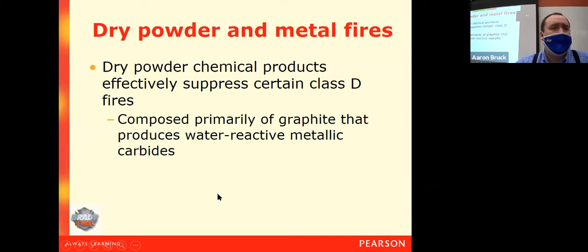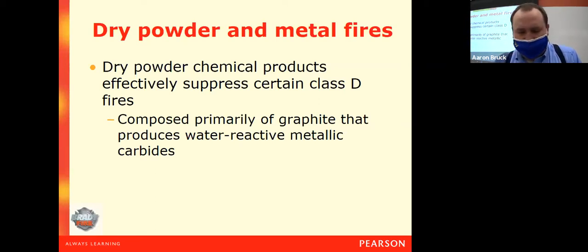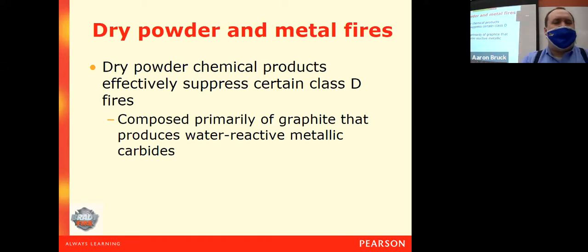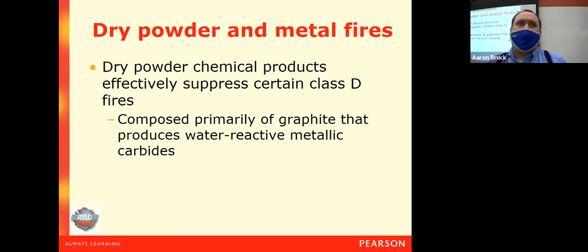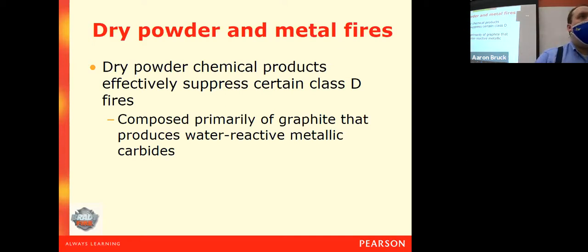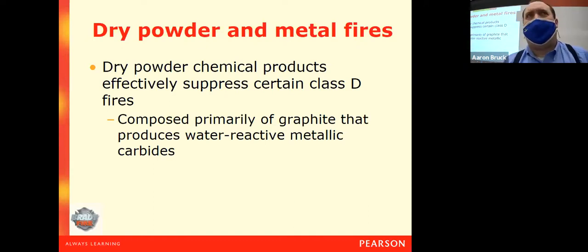For Class D fires, dry powder extinguishers use graphite as the primary ingredient. The graphite reacts with the burning metal to produce a metallic carbide. That metallic carbide will react with water to form less reactive, less dangerous materials — which is exactly why we can't use water on Class D fires. We apply the dry chemical, which produces a carbide that is not flammable, unless we dump water on it, so we keep water away from it entirely.